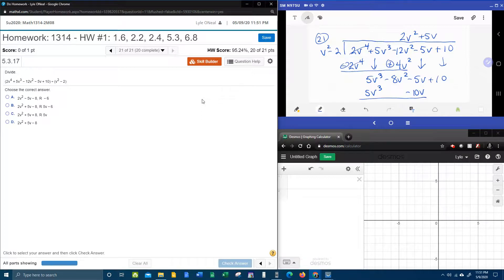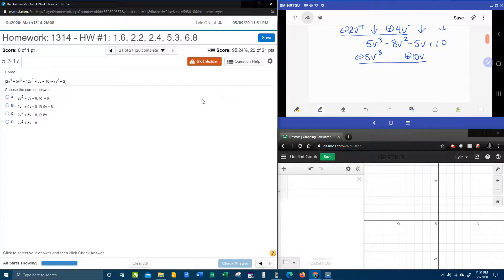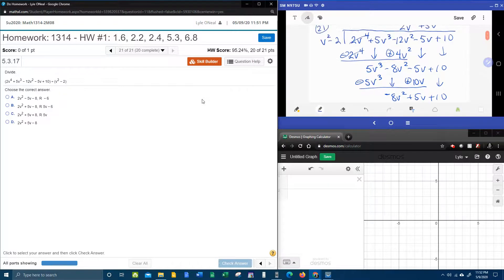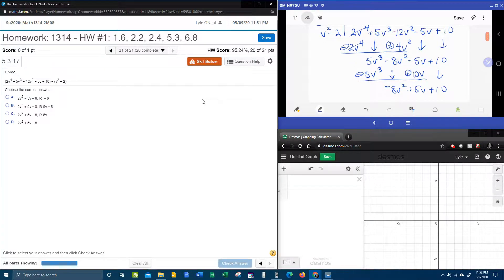Next, draw the line, change the sign, and then combine. Negative 8v squared falls through the hole. Negative 5 plus 10 is a plus 5v. Plus 10 comes down. And then one more time, we're going to rinse and repeat. We've got negative 8v squared.